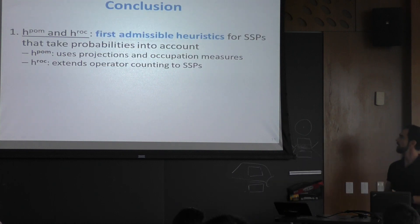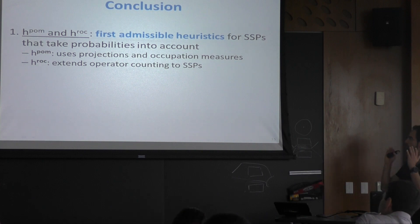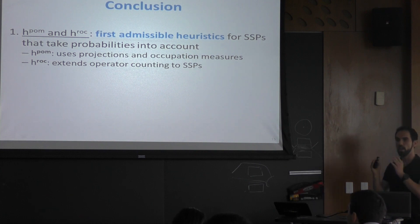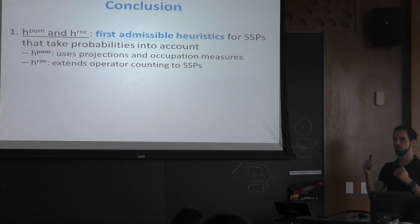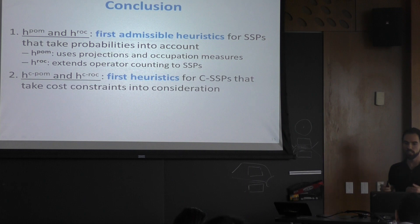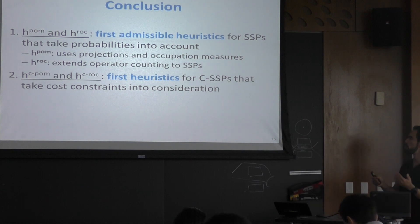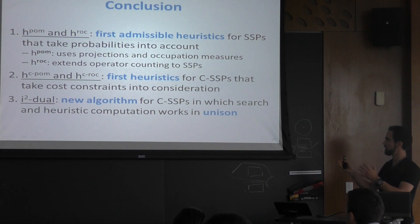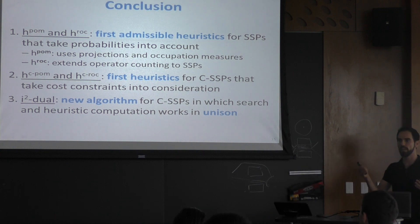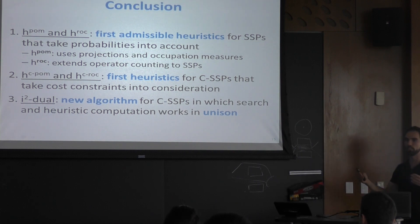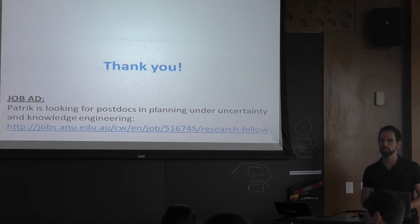To conclude: I presented H-POM and H-ROC, the first two admissible heuristics for probabilistic planning that are aware of probabilities, each coming from different sides of the community — one from operator counting, one from projections. We extended them to add cost constraints, yielding the first heuristics considering both probabilities and cost constraints. And I showed I2DUAL, a new algorithm that combines the search over explored states and the heuristic computation all at once.